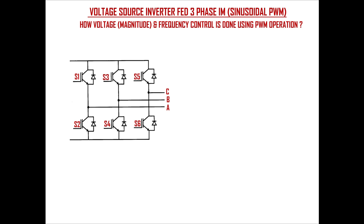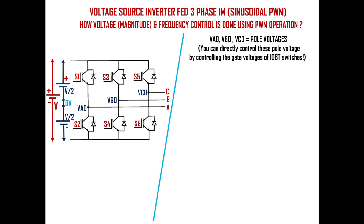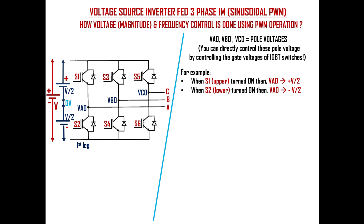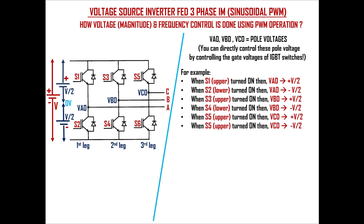Here the input DC voltage is center-tapped as shown. VA0, VB0, and VC0 in the inverter are called pole voltages. It is the potential difference between the center point of two switches in one leg and ground. You can directly control these pole voltages by controlling the gate voltages of the IGBT switches. When the first leg upper transistor S1 turns on, VA0 equals plus V/2. When the first leg lower transistor S2 turns on, VA0 equals minus V/2. Similarly for the second and third leg transistors.